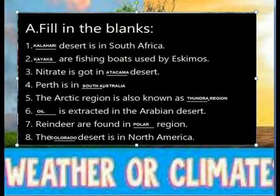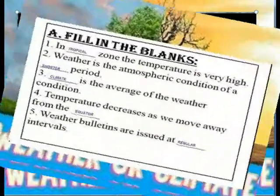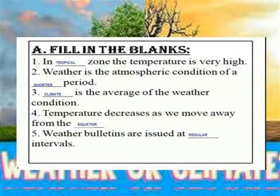They are also known as Polar regions. The Mojave desert is in North America. In tropical regions, the temperature is very high. Weather is the atmospheric condition over a shorter period. Climate is the average of the weather conditions. Temperature decreases as we move away from the equator. Weather bulletins are issued at regular intervals.